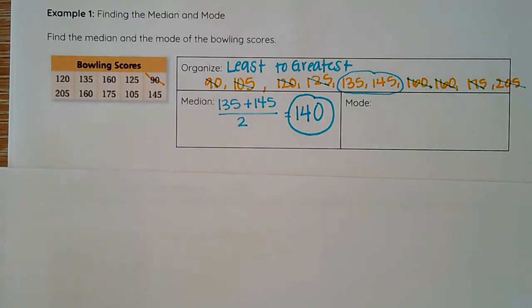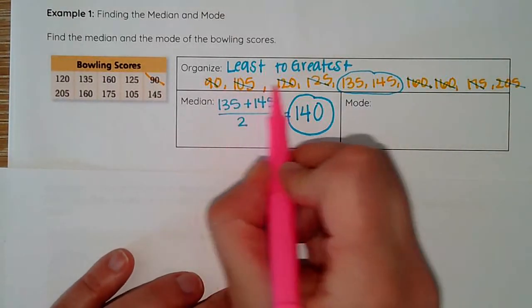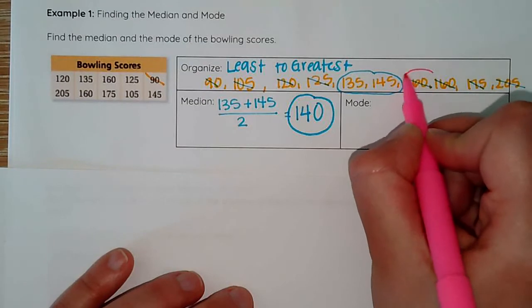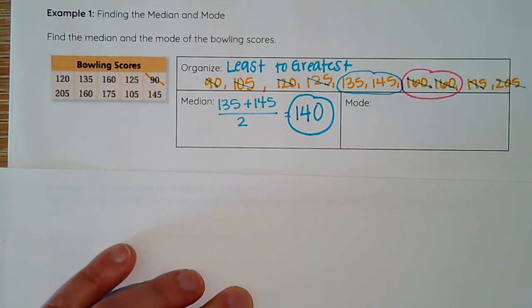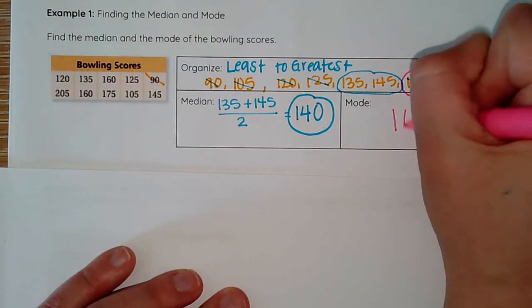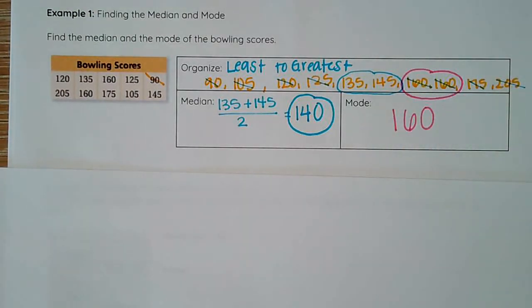Now the next part, I go to my mode and I need to figure out which data point, if any, occurs more frequently. Here I can see that the only duplicates are 160. 160 occurs two times, that's more than any other data point here, making my mode 160.